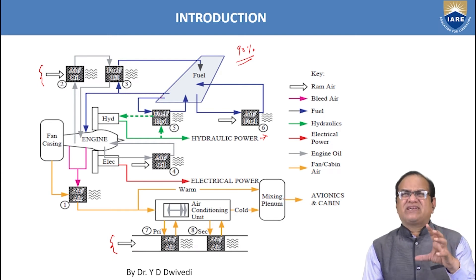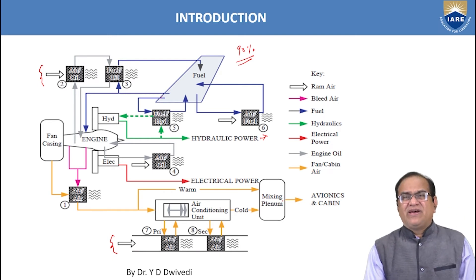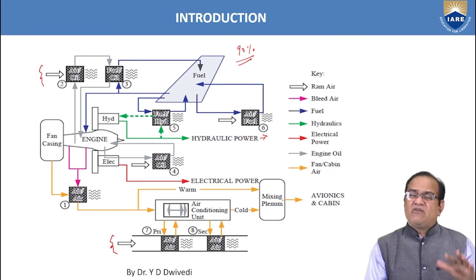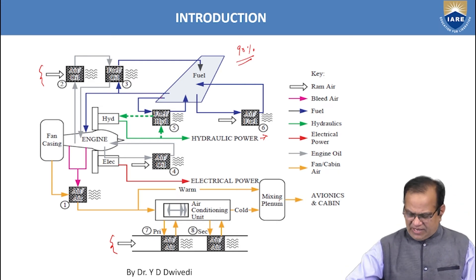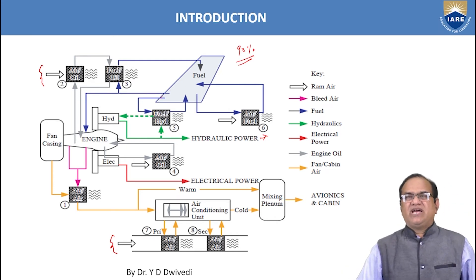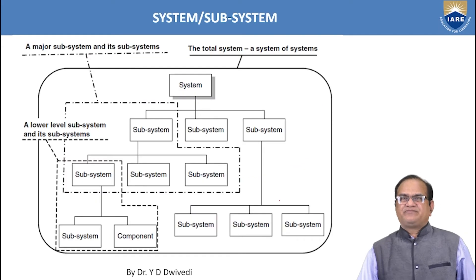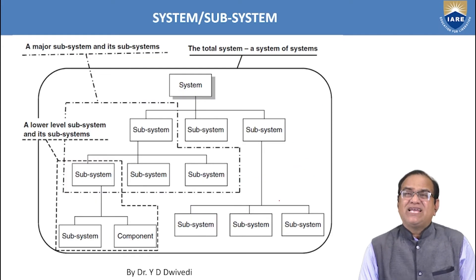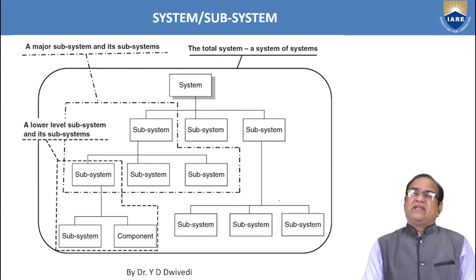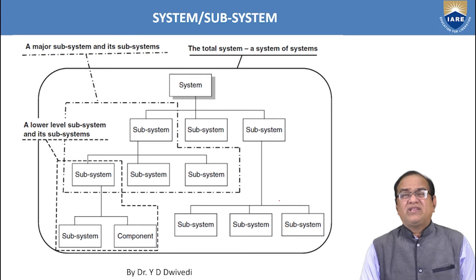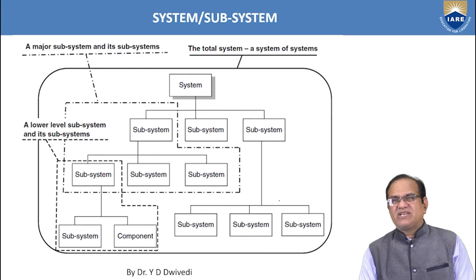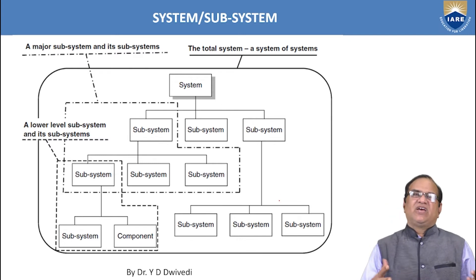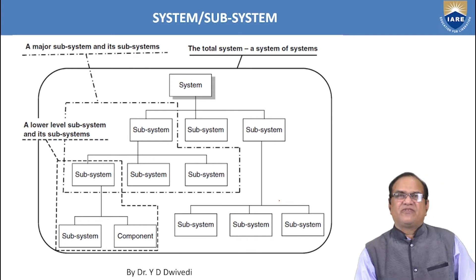This gives a basic introduction to the different types of systems we will study in this course. We can see that there is a system and then every system is divided into subsystems, which are further divided into sub-subsystems. So we have different types of system arrangements.